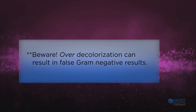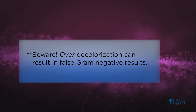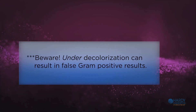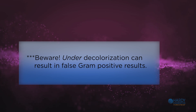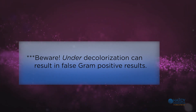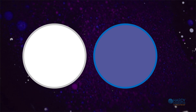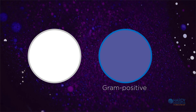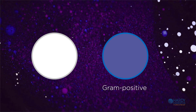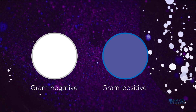Beware: over-decolorization can result in false gram-negative results. Beware: under-decolorization can result in false gram-positive results. In essence, gram-positive cells will be blue-purple and gram-negative cells will be colorless after decolorization.